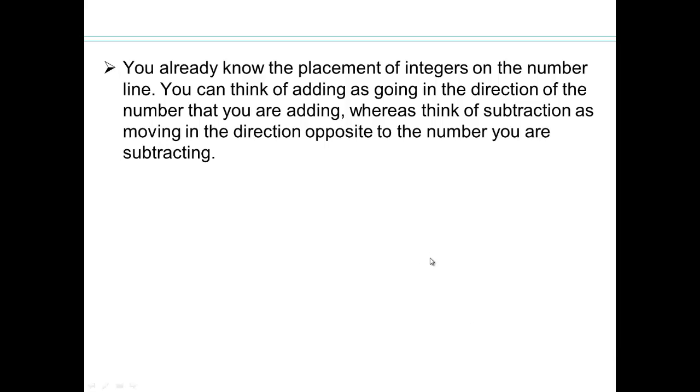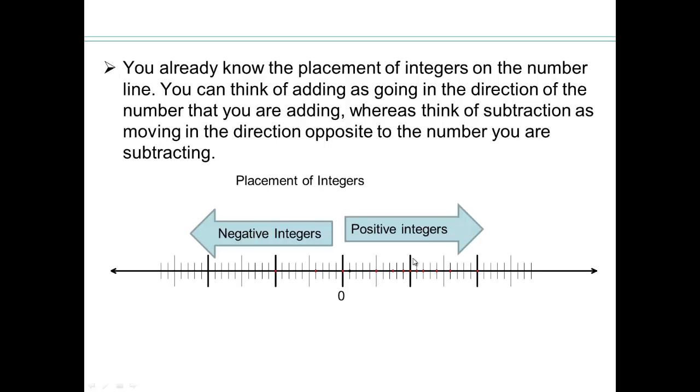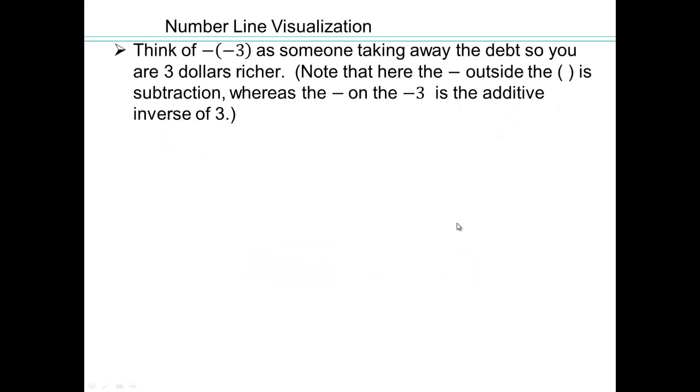All right, so we already know the placement of integers on the number line. We can think of adding as going in the direction of the number that we're adding and subtraction as moving in the opposite direction of the number that we are subtracting. We already know negative numbers are to the left of 0, positive numbers are to the right of 0.